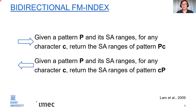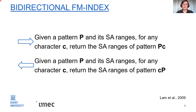This explains why we need a bidirectional index — one of which is the bidirectional FM index. A classical FM index can only do approximate backward searching: given a pattern P and its suffix array range, for any character c it returns the suffix array range of the new pattern cP. By adding the BWT of the reverse text and related data structures, we extend this to bidirectional functionality. Given a pattern P and its suffix array ranges over both the text and the reverse text, for any character c we can return the suffix array ranges of both Pc and cP, allowing us to add a character left or right at any point.